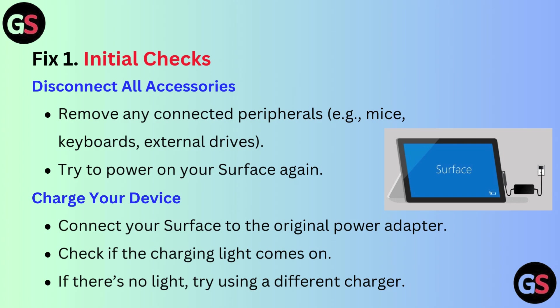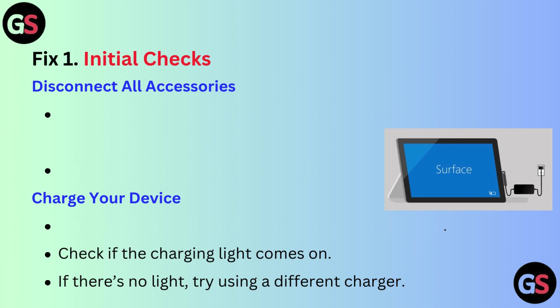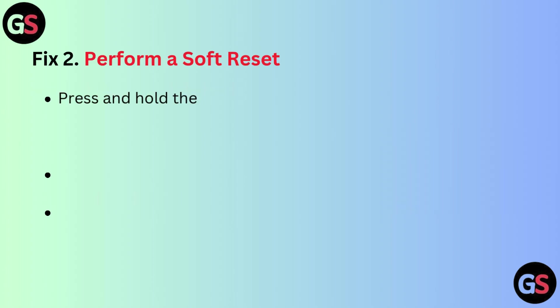Charge your device. Connect your Surface to the original power adapter and check if the charging light comes on. If there is no light, try using a different charger.